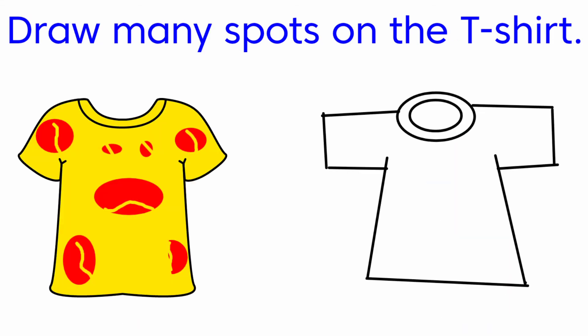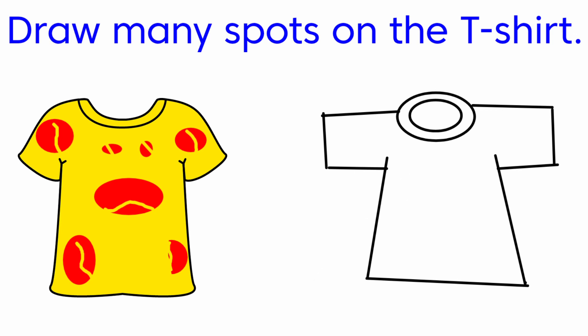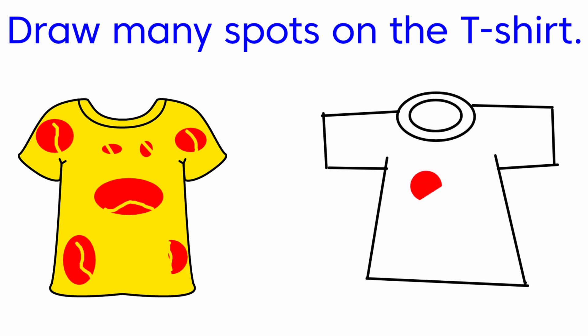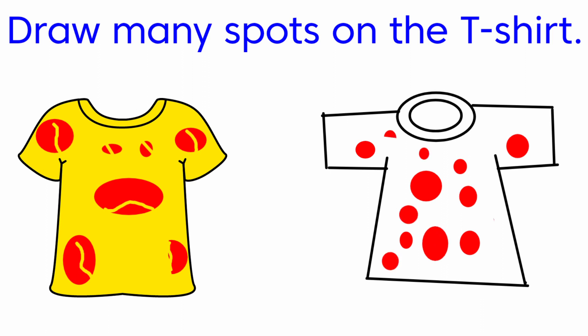Then look at here. Draw many spots on the white t-shirt. Here they have given two t-shirts. Among these two, one is a colored one and another one is a white colored one. In this white colored one, we are going to draw many spots. Yes, we did it.